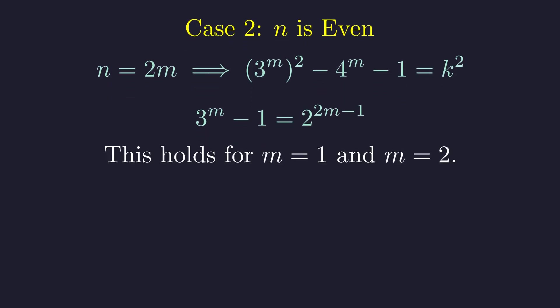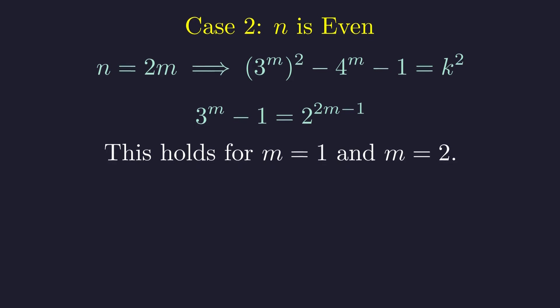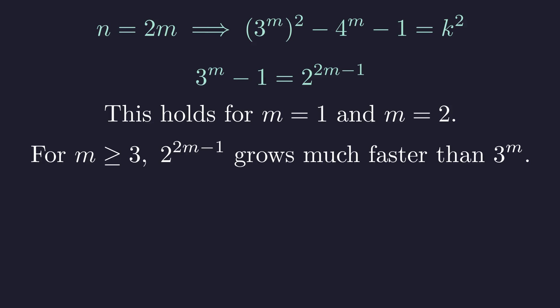If we check small values, this works when m equals 1, giving us n equals 2, and when m equals 2, giving us n equals 4. But here's the thing. For larger m, the right side grows much faster than the left side. The left side multiplies by 3 each time, while the right side essentially multiplies by 4. This means for m greater than or equal to 3, our expression is never the square of 3 to the m minus 1. We must now prove it cannot be any other perfect square either.